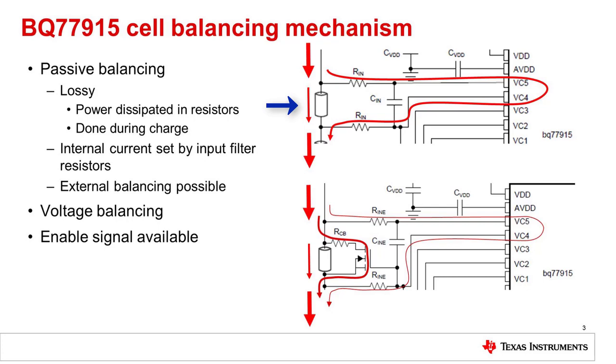For balancing current within the range supported by the device, internal balancing can be used, where current is handled by the internal FET. Current is adjusted with the RN of the filter circuit. As balancing current is increased by using smaller resistors, the filter effectiveness is decreased.